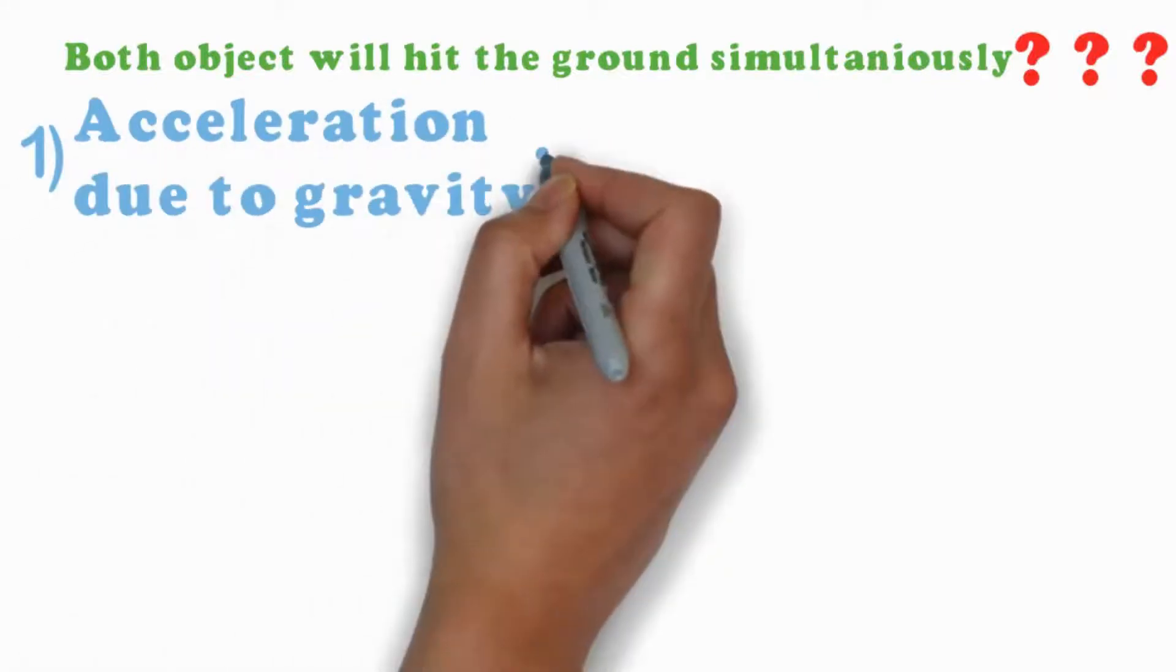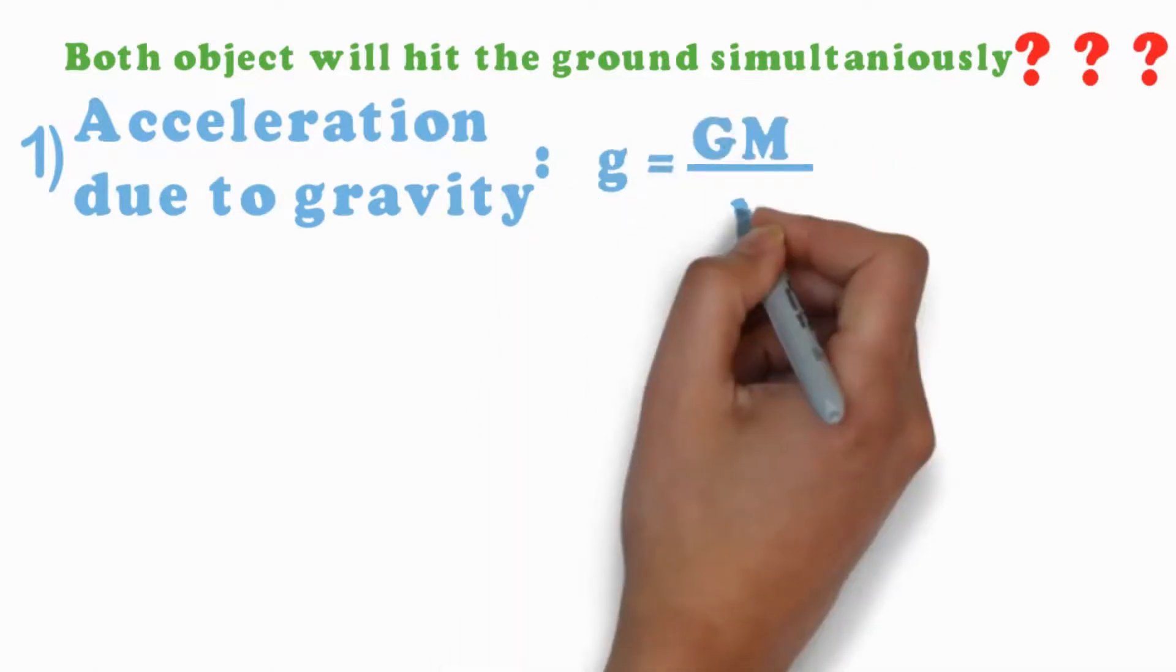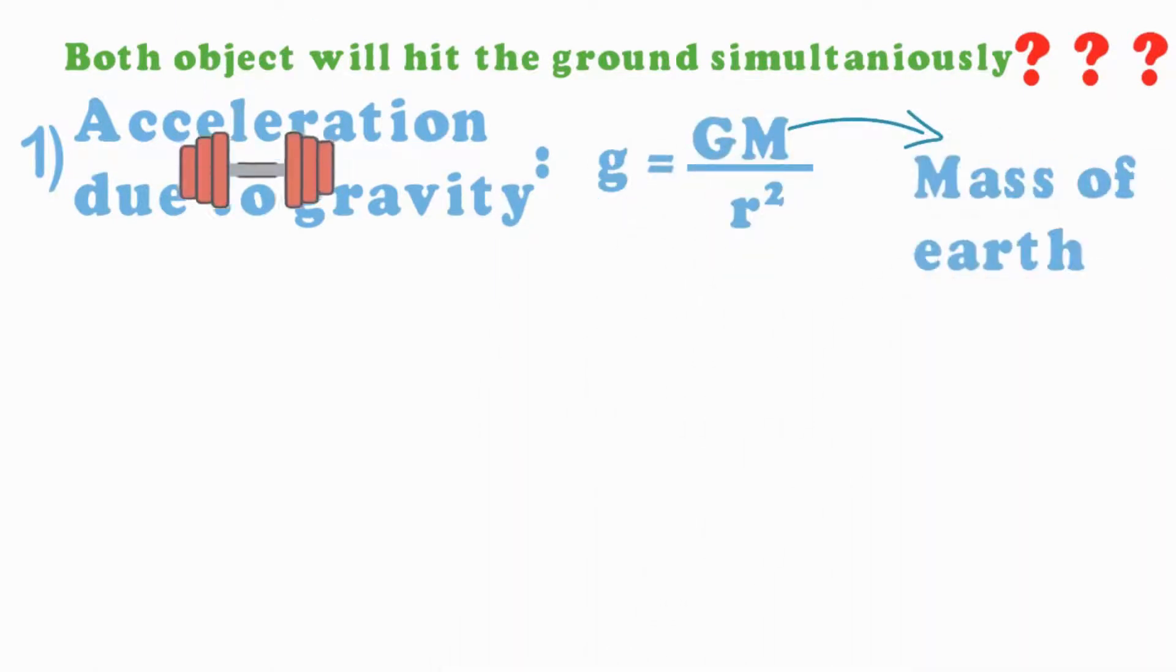There are two important concepts to understand this. First, acceleration due to gravity—it is independent of mass of the object. So for the dumbbell and bullet, acceleration due to gravity is the same.